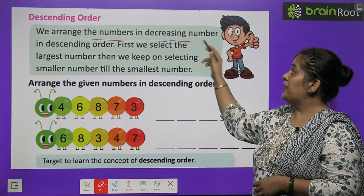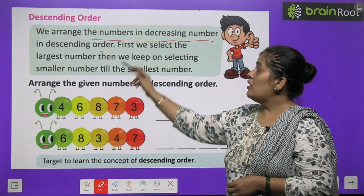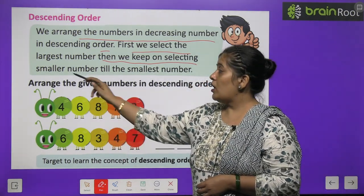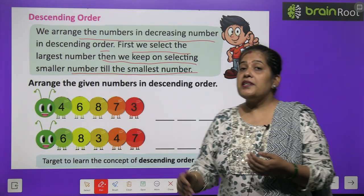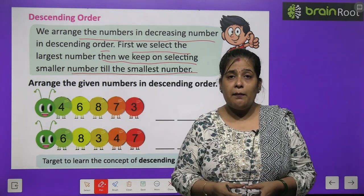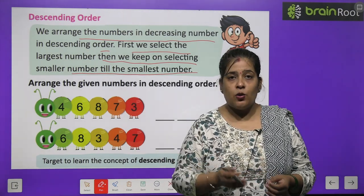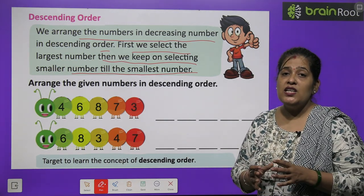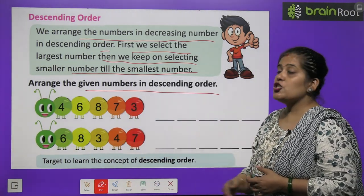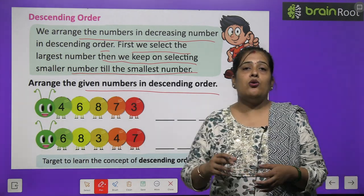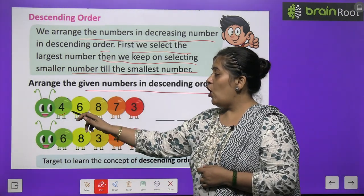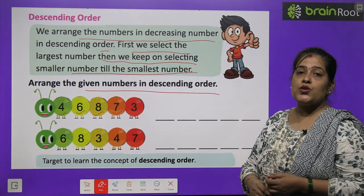Descending order — we arrange the numbers in decreasing order in descending order. First we select the largest number, then we keep on selecting a smaller number till the smallest number. Descending order mein hum kya karte hain? Diye hue numbers mein sabse pehle hum sabse bada number choose karte hain, uske baad usse chhota, aur then last mein jo sabse smallest number hota hai. The numbers given are 4, 6, 8, 7, and 3.